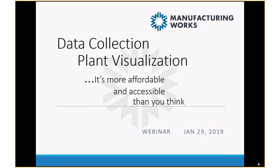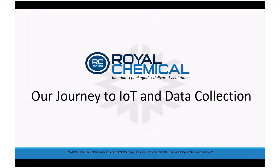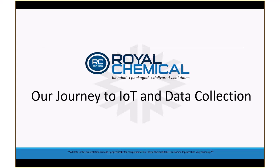Now let's hear how this is being done in Northeast Ohio. Our first speaker is Dave Robinson, Director of Business Information and Technology at Royal Chemical. In this role, he drives change that leads to better information, improves process efficiencies, decision-making, and visibility into workloads throughout his organization. Please welcome Dave Robinson.